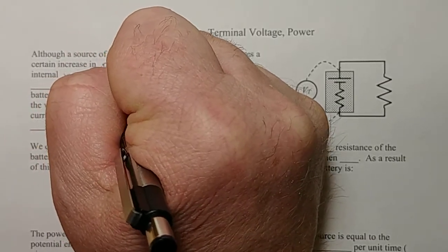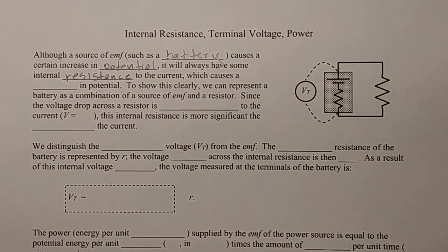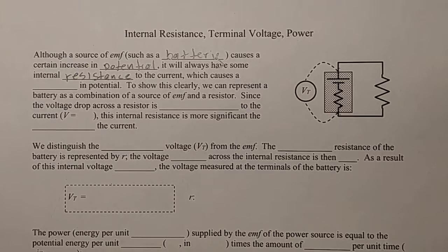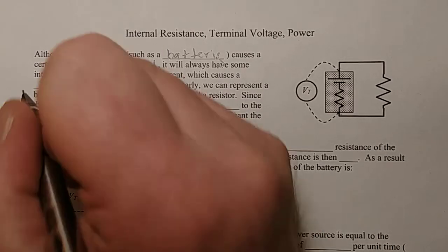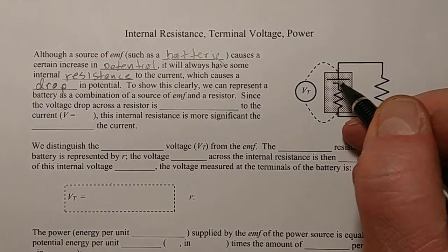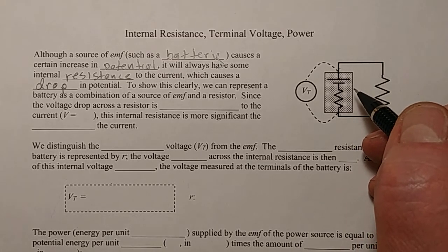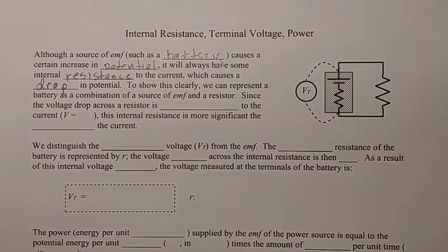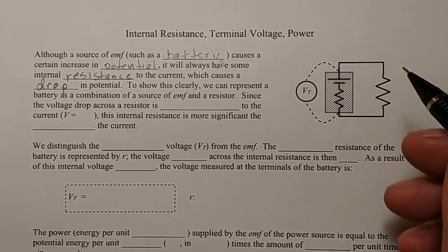It has internal resistance. The charges have to actually work their way through the battery itself. They encounter some resistance inside the battery and what that does is it causes a drop in potential. So even though the battery might be based on a chemical reaction that has a certain voltage associated with it, if you use that battery, you might find that you get a lower voltage than that.